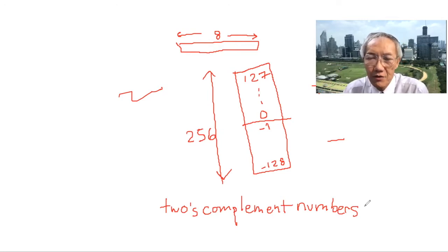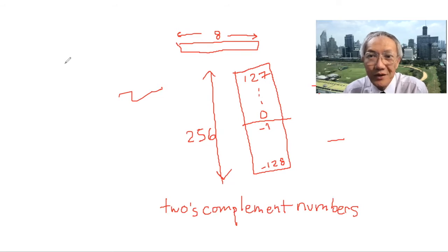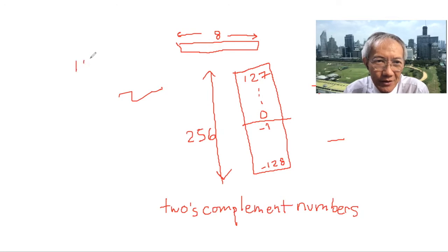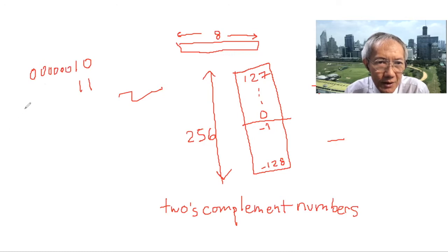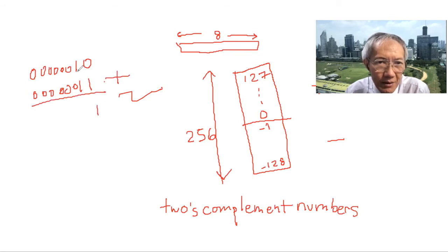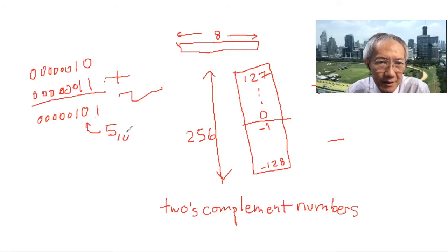To fully understand, let's try some numbers. If we want to add two and three: two is zero one zero, three is zero one one. You add them — one plus one is zero carry one — and you get the result number five in base ten. Very simple.